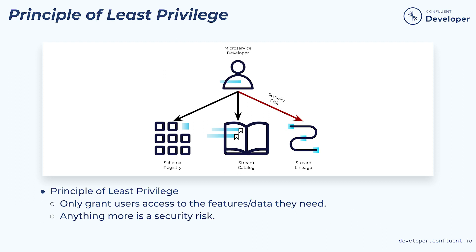When assigning roles to users, it's always good to think about the principle of least privilege. This principle states that you should only grant access to the features a user needs to perform their duties. Anything beyond that is creating a security risk. In the hands-on exercises, we've been operating with the organization admin role, which is a far more powerful role than we would want to give to most users.